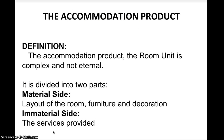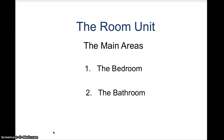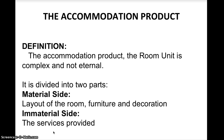The accommodation product, which is the basic product of a hotel, is the room. The accommodation product room unit is complex and not eternal. It's divided into two main parts: the material side, which is what we see — the layout of the room, the furniture and the decoration — which are all the tangible parts of the room; and the immaterial side, which is intangible, that are the services provided in the room and in the hotel.